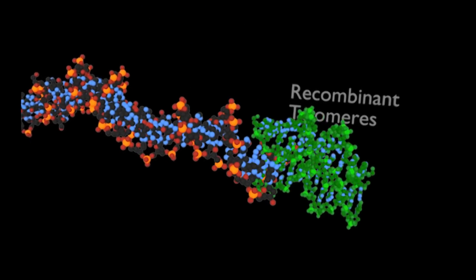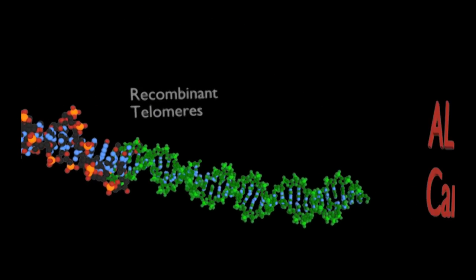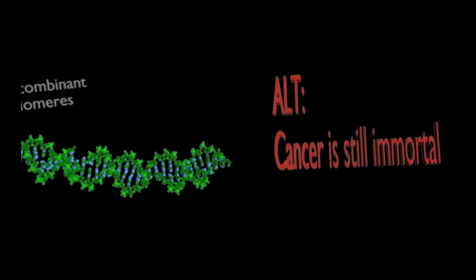Second, 15% of cancers don't even need telomerase to survive. Instead, they use a process called alternative lengthening of telomeres, or ALT, which involves homologous recombination.